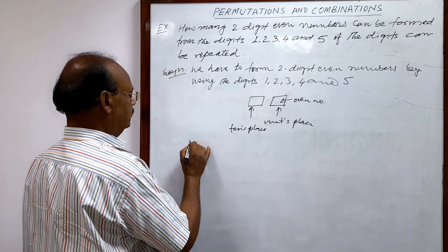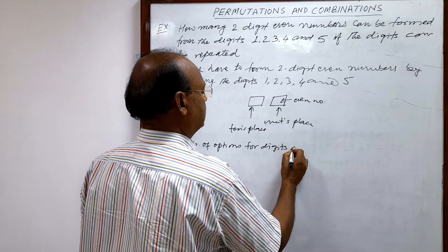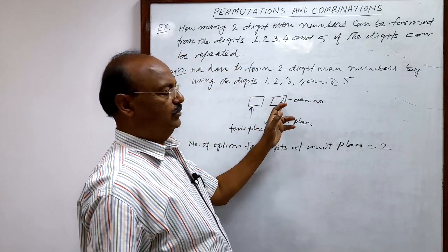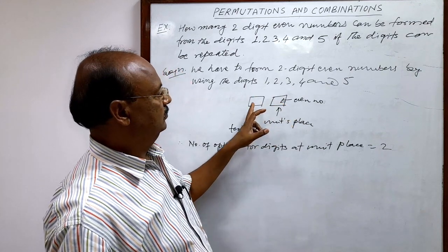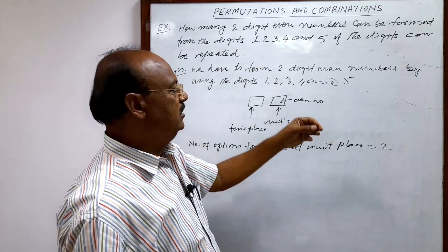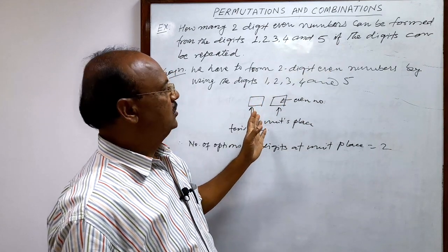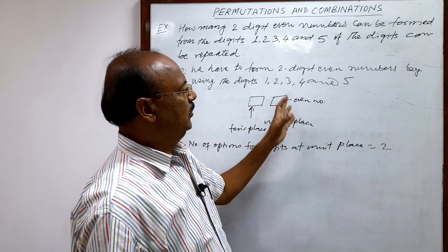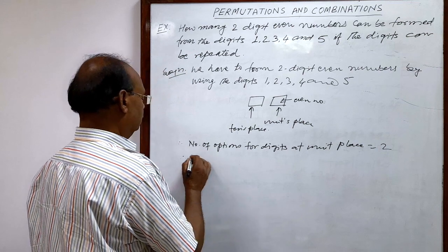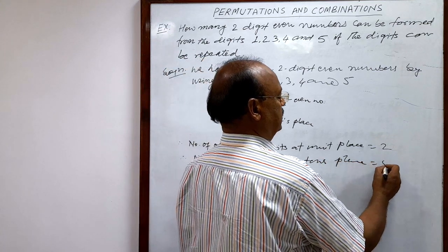So the number of options for the digit at units place is 2 — we can take either 2 or 4. For the digit at tens place, since digits can be repeated, any digit selected for units place can also be selected for tens place. So out of these 5 digits, even though we selected 1 for units place, all 5 remain available. Therefore, the number of options for the digit at tens place is 5.